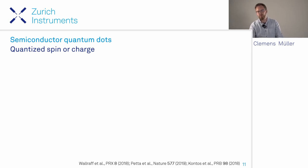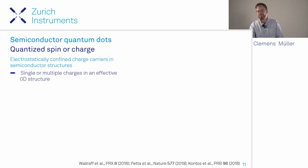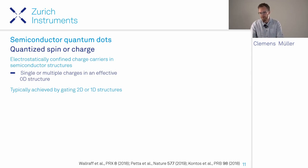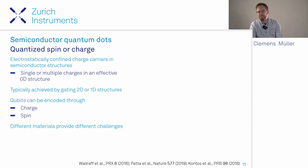For semiconductor quantum dots, we electrostatically confine charge carriers in semiconductor structures in all spatial directions, creating an effectively zero-dimensional quantum dot. You would typically start with a low-dimensional structure like a 2D electron gas or a 1D quantum wire. You can encode a qubit using either the charge—having a charge in one place or another—or using the spin of these charge carriers.